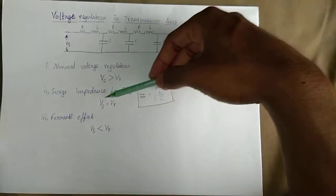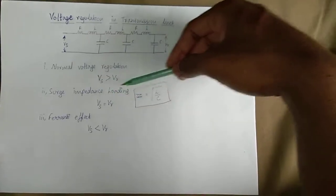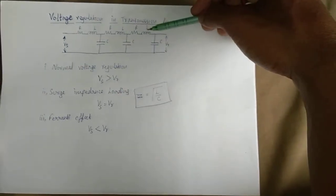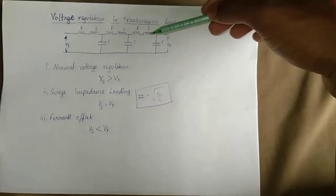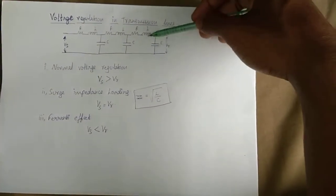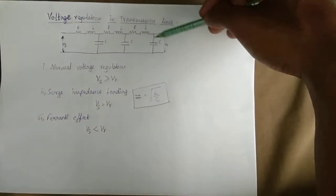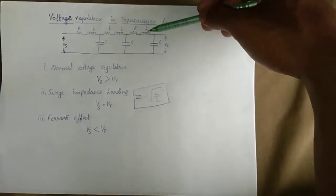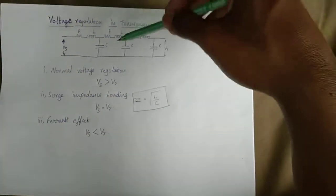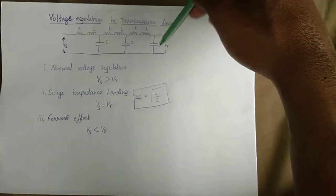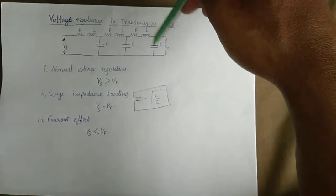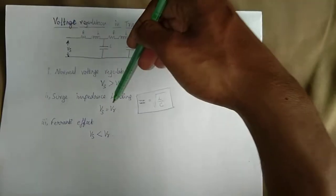The Sending End Voltage is equal to the Receiving End Voltage. The Inductor power and the Capacitor power are equal to the Sending End Voltage. When Vs equals Vr, the voltage at the receiving end equals the sending end voltage.